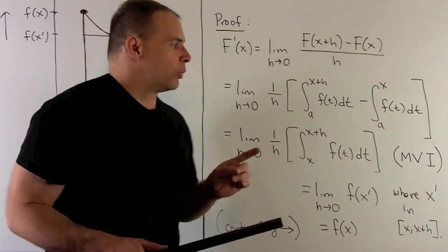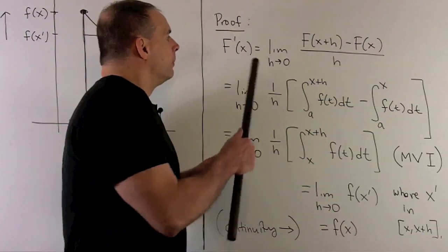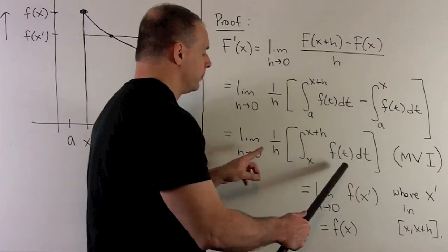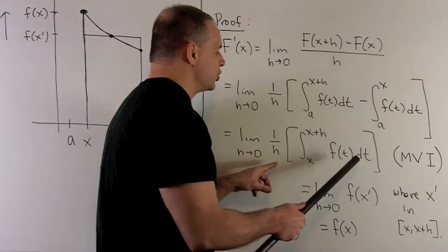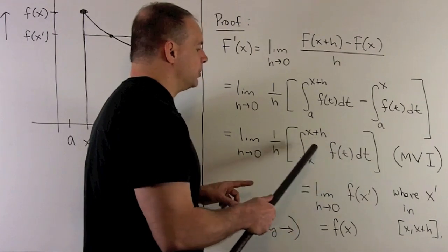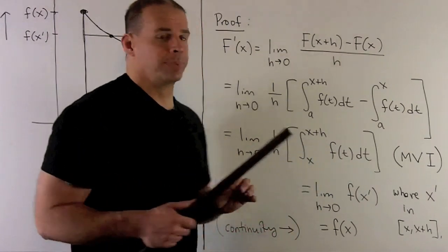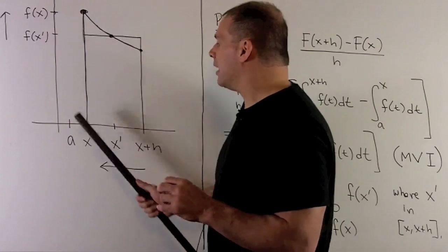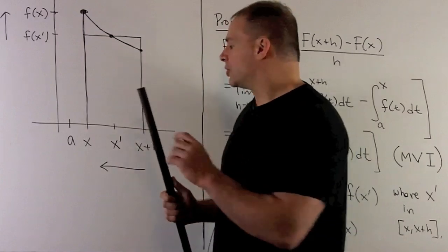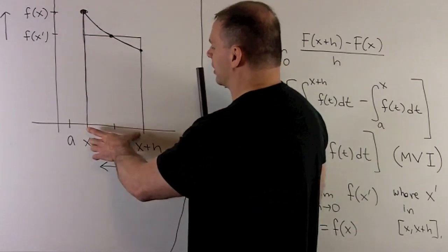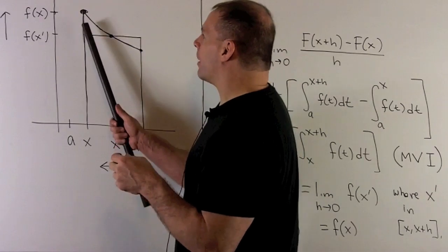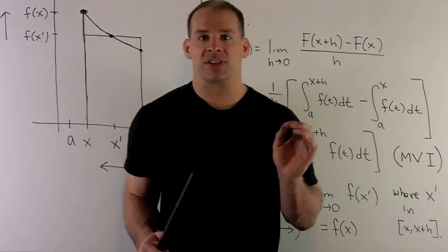For the geometric picture of the proof: after the algebraic manipulation, we arrive at the area under f(t) between x and x+h. The horizontal line represents our mean value. As we squeeze the length of this interval down to x, that pushes our mean value up to the point f of x.